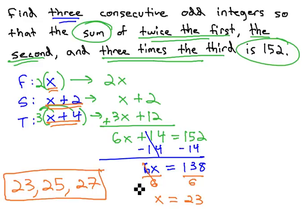These are our three consecutive odd numbers. If we were to take twice the first, 23 times 2 is 46, plus the second, 25, plus 3 times the third. The third number, 27 times 3 is 81, and add those together, we would get 152.